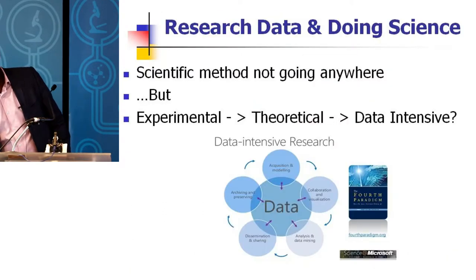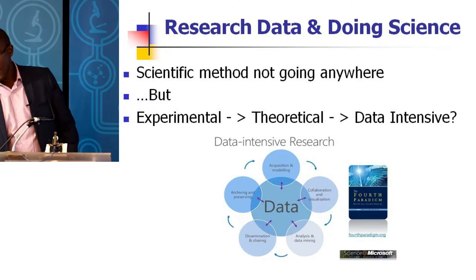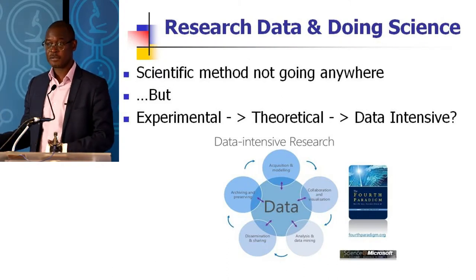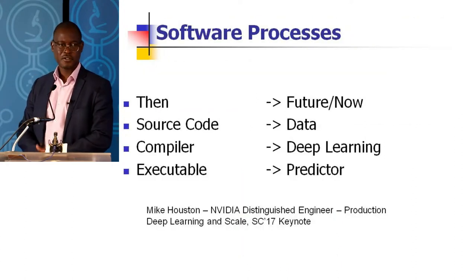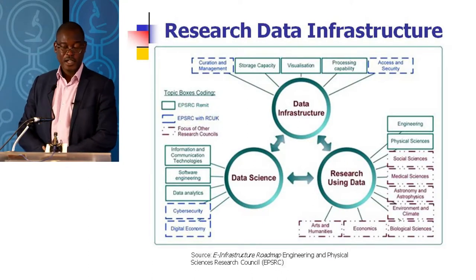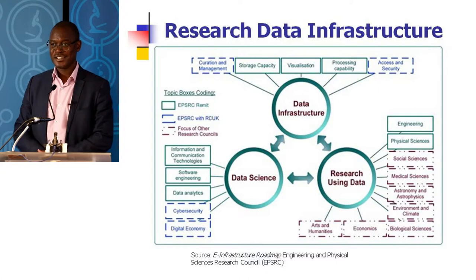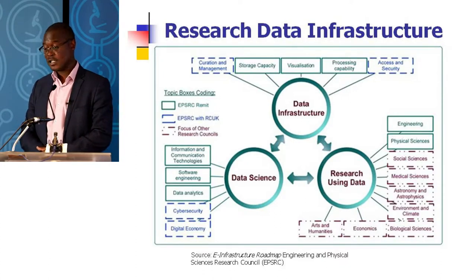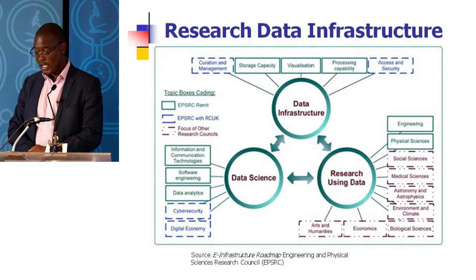For me as an academic, the value and interest is also in research data and how we do science. We've transitioned from experimental to theoretical, and now we're going data-intensive — but the data has to be there before you generate it. People are not just talking about software processes, but deep planning to come up with predictors and recommender systems. I've interacted with South African colleagues — you're on the right path, you've got TENET, SunRen, and CHPC — these are good things. We need them to make sure we accrue the best out of research data.